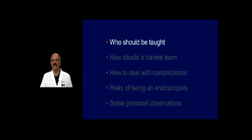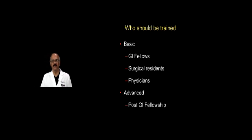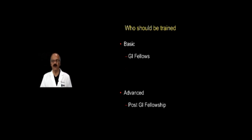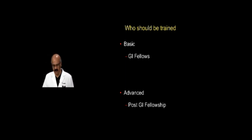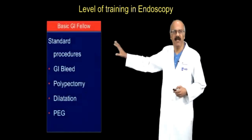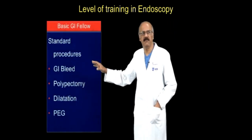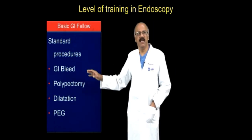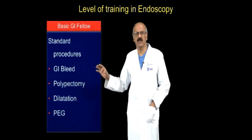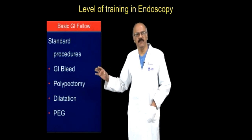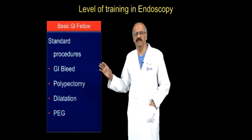Who should be taught endoscopy? This has been debated a lot in literature — it can be basic GI fellows, surgical residents, physicians, and so on. For the purpose of this talk, this is aimed at GI fellows and advanced postgraduates who have finished their GI fellowship and want to do an advanced training course. Basic GI fellows should know how to do standard procedures — GI bleed, polypectomy, dilatation, PEG, basic gastroscopy, colonoscopy — and these few basic procedures should be part of GI fellowship.